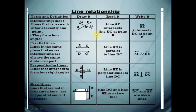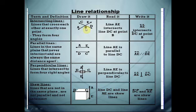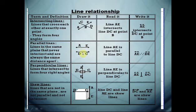Now, line relationships. We have four relationships between lines. The first is called intersecting lines — they are lines that cross each other at one point. For example, line CD and line AE cross at point B, so we say line CD intersects line AE at point B. The second relationship is parallel lines — two lines in the same plane that never intersect. For example, line AE and line DC never intersect, so they are called parallel.